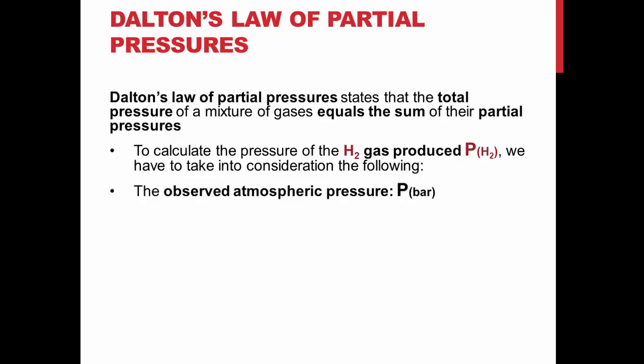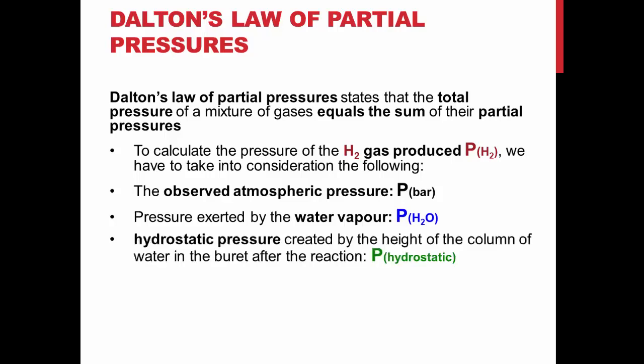You know P bar, or atmospheric pressure, from reading the barometer. The partial pressure of water vapor can be looked up in the CRC handbook at the temperature of water used in the experiment. The hydrostatic pressure can be found by measuring the height of the column of water in the burette above the beaker with a ruler. This measurement should be recorded in millimeters. This value can be converted to millimeters of mercury by dividing by 13.6, which is the specific gravity of mercury.